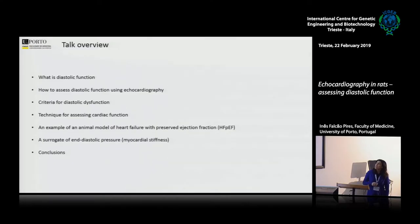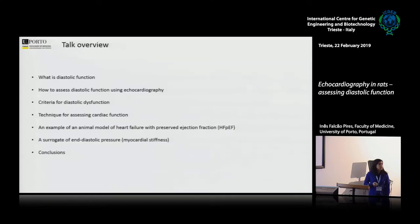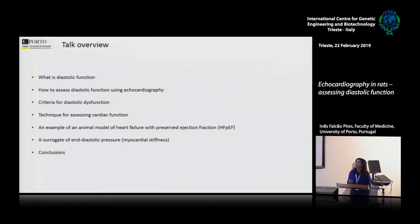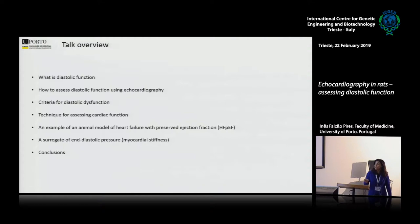The technique to assess cardiac function, with a particular focus on diastolic function. Then I will provide two studies from our lab — one is an example of an animal model of heart failure with preserved ejection fraction. Part of the problem of not having a good therapy for this syndrome is because we don't have a robust animal model. And then I will provide a surrogate of diastolic pressure — an invasive way to assess diastolic dysfunction — and how we can do it with echocardiography in a very reliable way. And then, of course, I'll conclude.